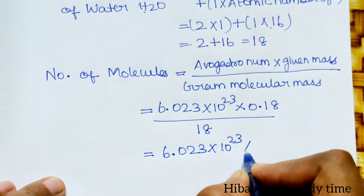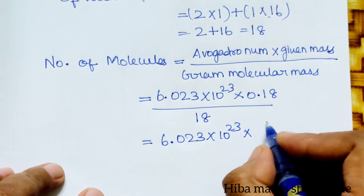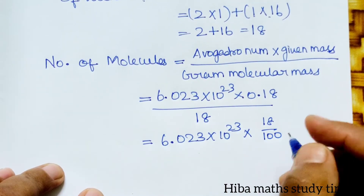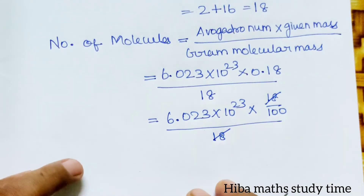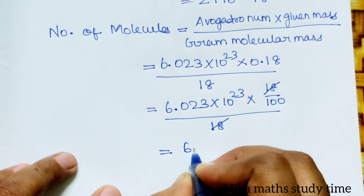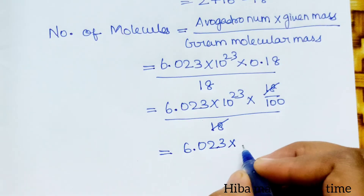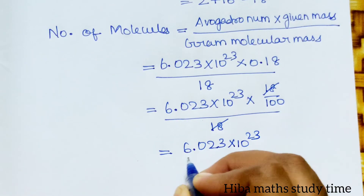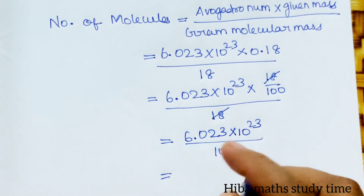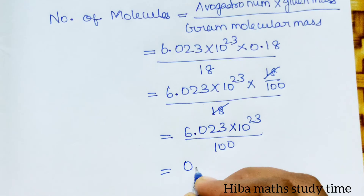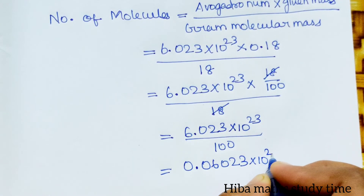So: 6.023 into 10 power 23, multiplied by 0.18 divided by 18. The 18s cancel, giving 6.023 into 10 power 23 divided by 100, which equals 0.06023 into 10 power 23, or 6.023 into 10 power 21 molecules.